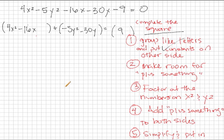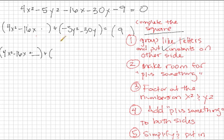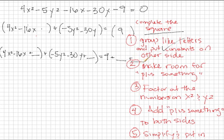Step number two is what I call 'make room for plus something.' We have an X squared and a Y squared term, and we have to turn those both into perfect squares. To do that, we need to make room for a plus something in both of these groups. So we'll have 4X squared minus 16X plus something, plus negative 5Y squared minus 30Y plus something. Since I've added two plus somethings to the left-hand side, I also have to add two plus somethings to the right-hand side. Step number two is done.